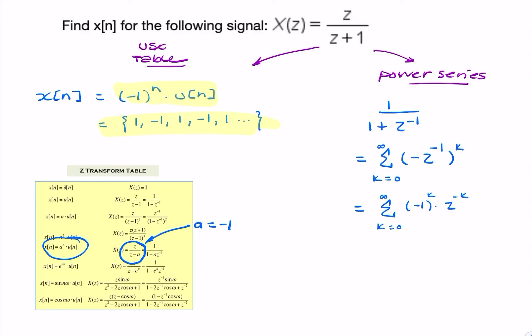And that looks just like the definition of the z-transform. So I can simply say x of n. Because remember, this now is the definition of the z-transform. So I can extract x of n straight from there. So I can say x of n equals minus 1 to the power k, and I multiply by a unit step just to demonstrate that k starts from 0.